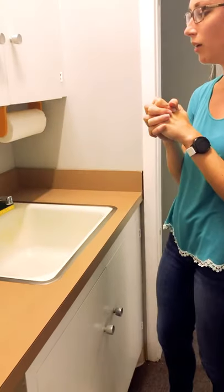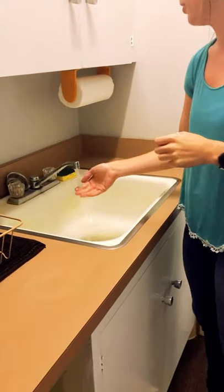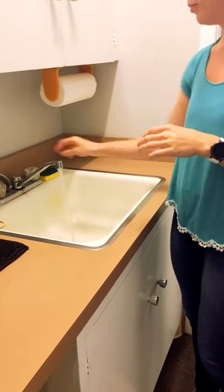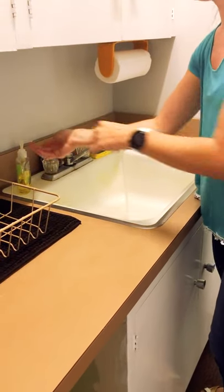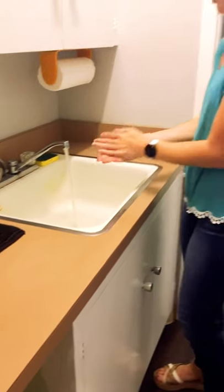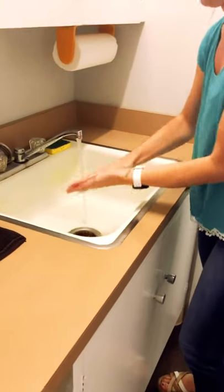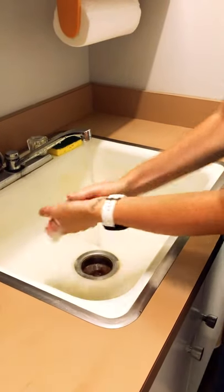The first step in washing your hands is turning on the faucet. Then you want to apply enough soap to your hands that it covers the surface area of your hands. Wet your hands a little bit, and we are going to start by rubbing our palms together.